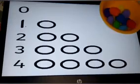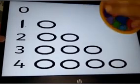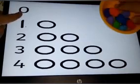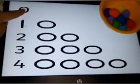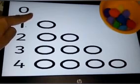Let's revise numbers with this activity. These are the numbers and this is pom pom. I am placing these pom poms in front of numbers. Zero means nothing, so nothing in front of zero.